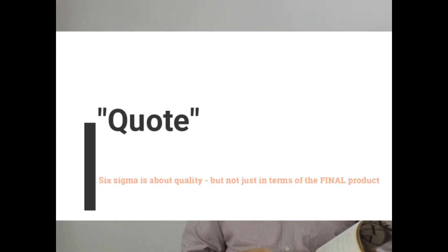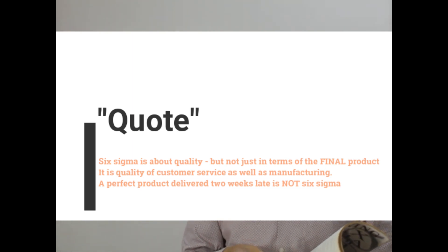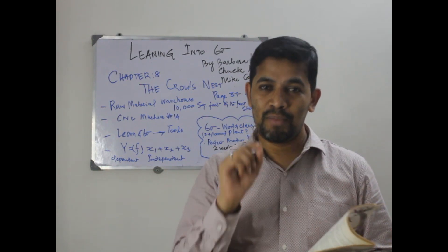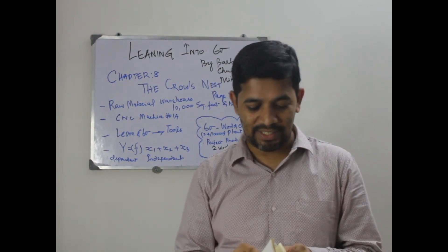There's a beautiful quotation that says Six Sigma is about quality, accuracy, and precision, but not just in terms of final product. It is quality customer service as well as manufacturing. That means Six Sigma caters to both manufacturing and services. A perfect product delivered two weeks late is not Six Sigma.